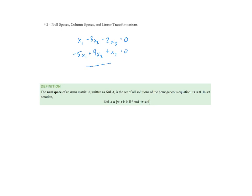x1 minus 3x2 minus 2x3 equals 0, negative 5x1 plus 9x2 plus x3 equals 0. That is a homogeneous system we saw previously. We can write the coefficient matrix A as [1, -3, -2; -5, 9, 1]. We previously solved this homogeneous system and wrote down the solution vector. Because I have two equations and three variables, we definitely have at least one free variable.